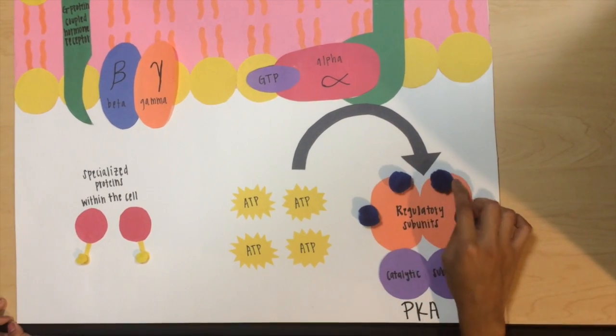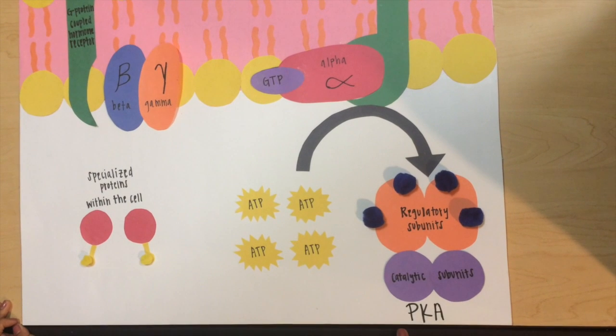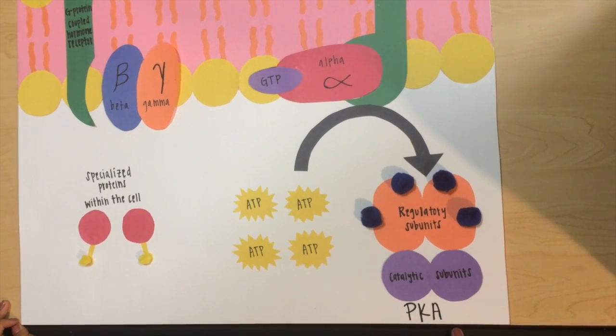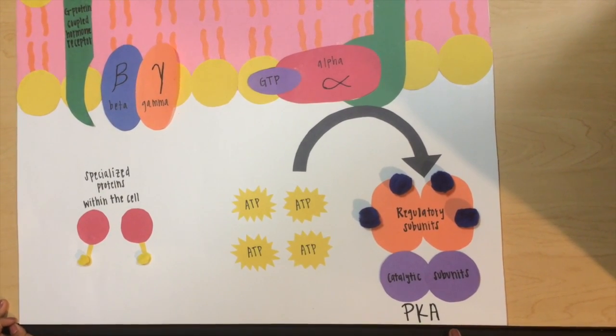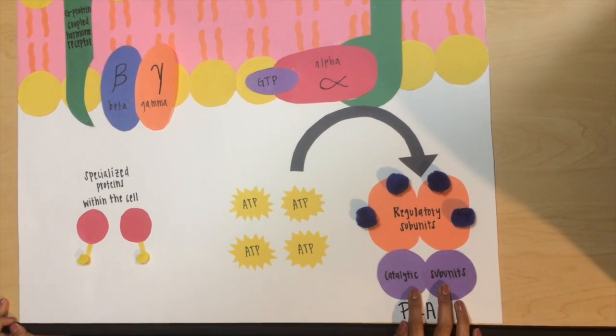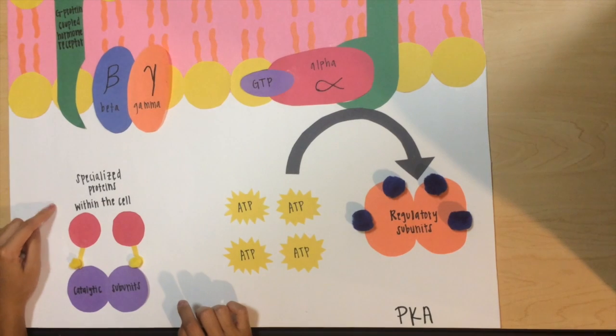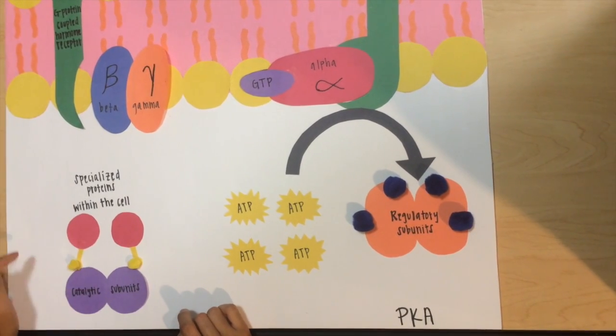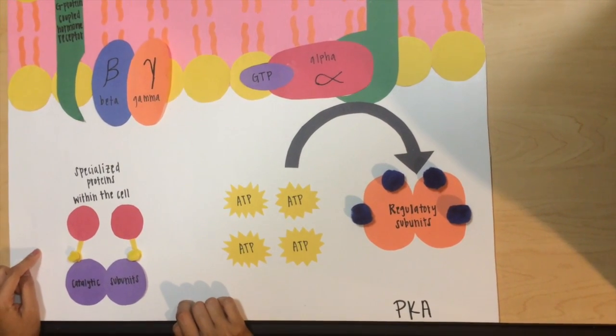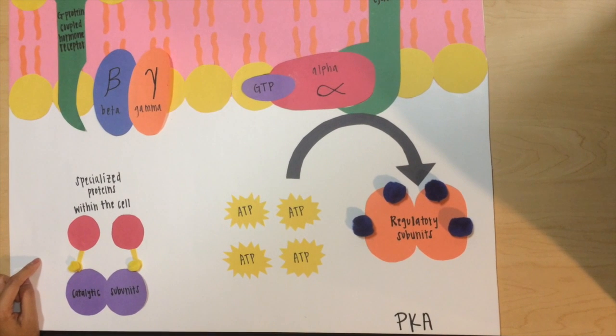Cyclic AMP binds to the regulatory subunit of protein kinase A, also known as PKA. The catalytic subunits then dissociate and phosphorylate proteins within the cell. This form of post-translational modification results in a cascade of intracellular responses.